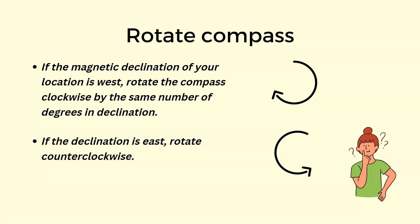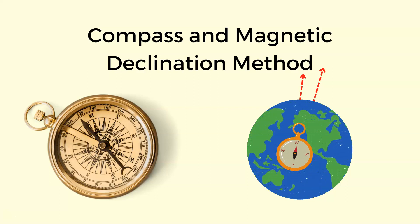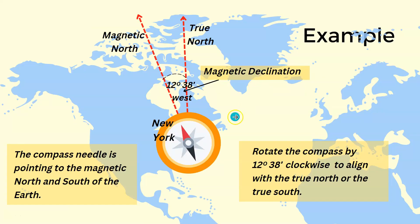The value of magnetic declination can be found on the internet — there are different websites that can tell you the magnetic declination of your location. For example, suppose your location is New York. The magnetic declination of New York is 12 degrees 38 minutes west. Since the declination is west, align the magnetic compass needles along the north-south points, then rotate the compass clockwise by 12 degrees 38 minutes to get the true north-south line.